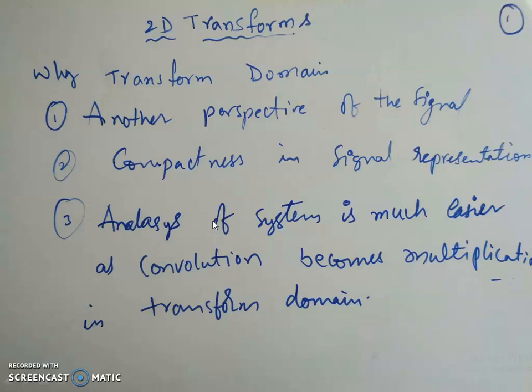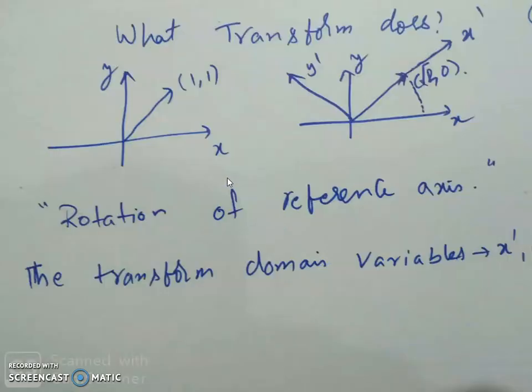The third advantage is that analysis of a system is much easier in the transform domain. In general, when you move to the transform domain, the convolution operation becomes multiplication, and hence we can analyze the signal more easily. With this, let us move to the transform.